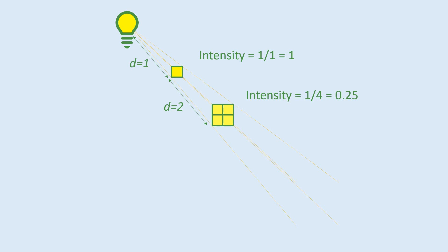And so the intensity would be one divided by four or 0.25. Each square would be receiving four times less light than when it was placed one meter away.